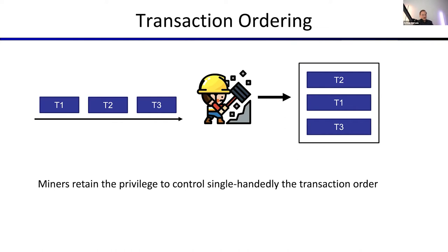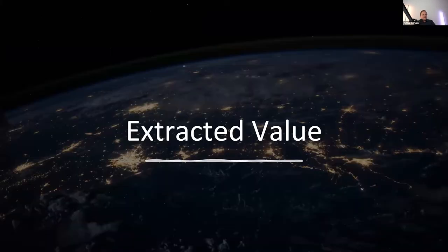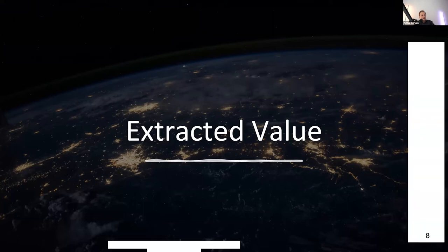The key takeaway is that miners retain the privilege to single-handedly control transaction order. There's no consensus about the order — it's a single-handed authority the miner has while mining a block. There isn't specifically a network consensus about which transaction order to abide by.